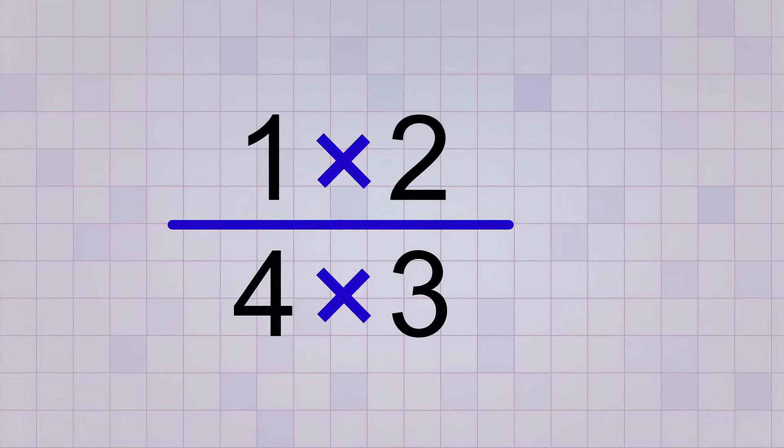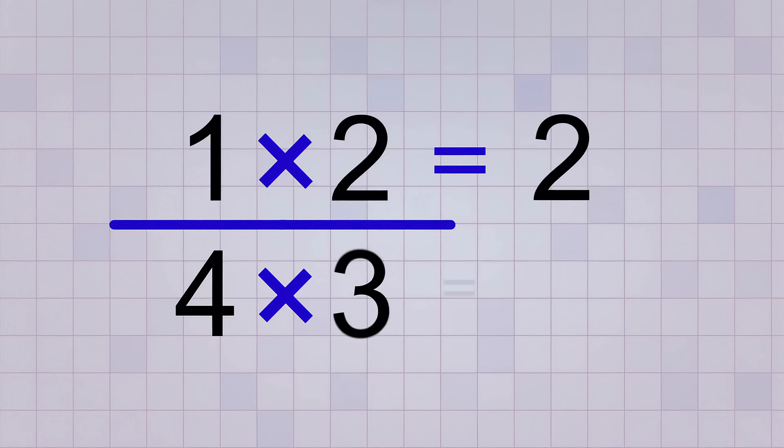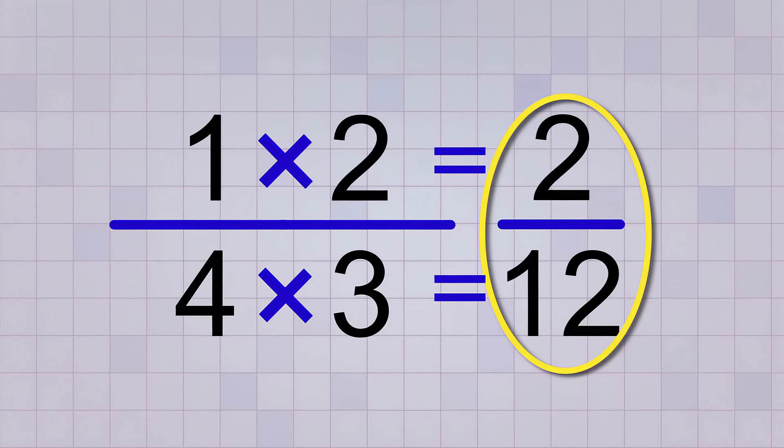In fact, if we go ahead and do the multiplications, 1 times 2 equals 2, and 4 times 3 equals 12, then we do have a fraction, and it's the answer to our problem.